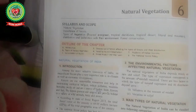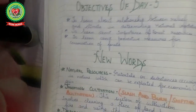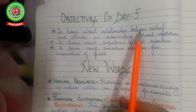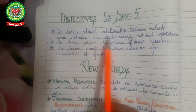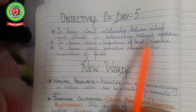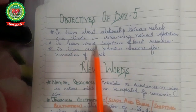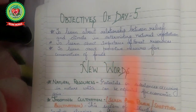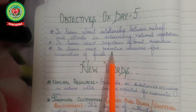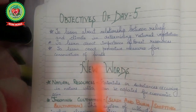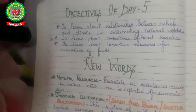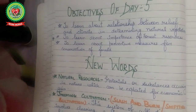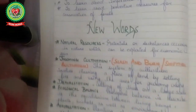Today our objectives are: to learn about the relationship between relief and climate in determining natural vegetation, to learn about the importance of forest resources, to learn about preventive measures for the conservation of forest. While going through these objectives we will also be learning some new words.